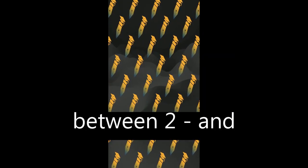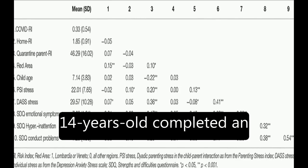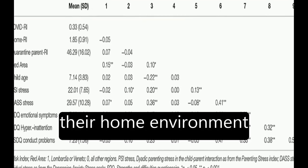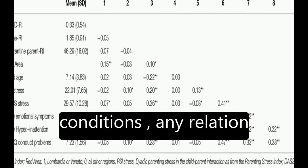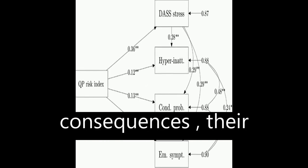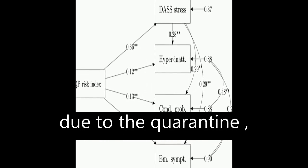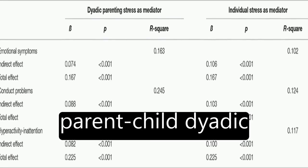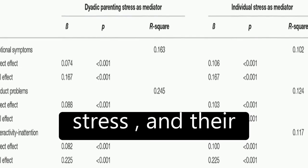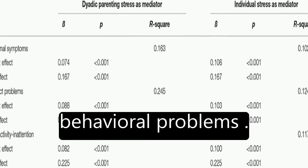Parents of children aged between 2 and 14 years old completed an online survey reporting their home environment conditions, any relation they had to the pandemic consequences, their difficulties experienced due to the quarantine, their perception of individual and parent-child dyadic stress, and their children's emotional and behavioral problems.